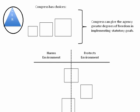In this case, I've identified three different boxes — a small box, a medium-sized box, and a large box — with the identifier that Congress has choices. When we're talking about Congress, we look immediately to the statutory laws. Congress can give the agency greater degrees of freedom in implementing statutory goals. This is the delegation doctrine, which suggests that Congress can pass laws that delegate the responsibility of implementation to an executive agency — and that's essentially where the regulations are derived from.